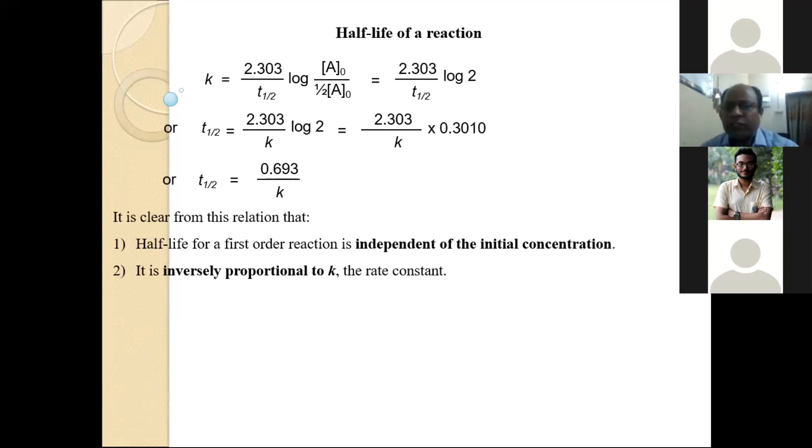K is the rate constant. The half-life of a reaction depends on the rate constant, not on initial concentration. If you know the value of the rate constant, you can calculate the value of half-life of a first order reaction.